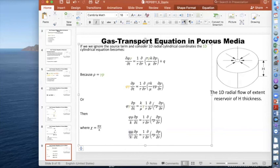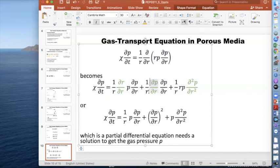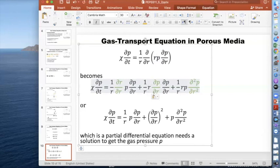We'll rewrite it like this and replace phi mu over k with chi. This is our target equation. We need to expand the left side. We have three components: p squared, p, and partial p partial r. We'll take the derivative for each term using the product rule.